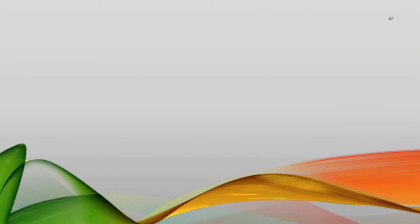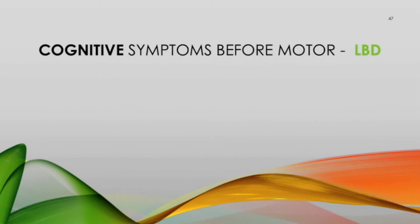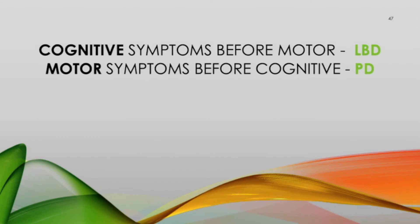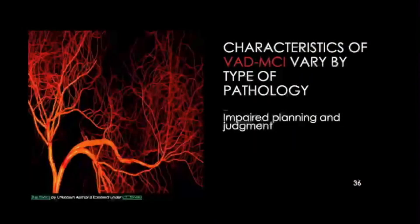To help differentiate someone with Lewy body disease from someone with Parkinson's disease, we consider cognitive symptoms and motor symptoms and when they occur. When cognitive symptoms occur before motor symptoms, the likelihood is that it's Lewy body disease. When motor symptoms occur before cognitive symptoms, we think of it as Parkinson's disease.